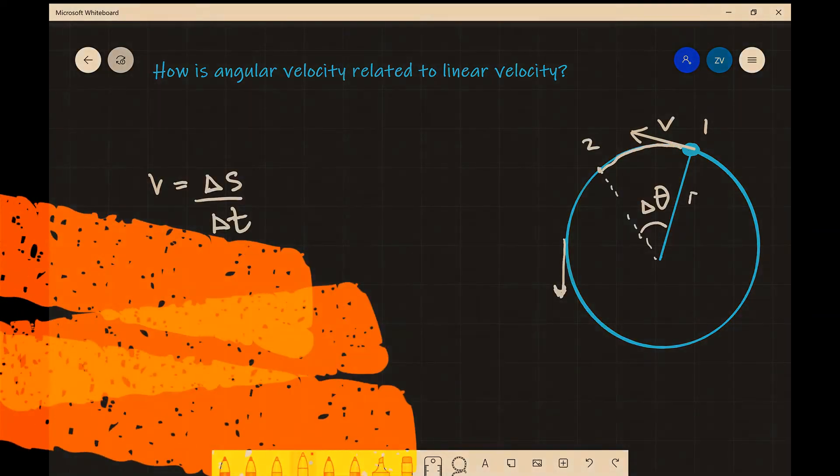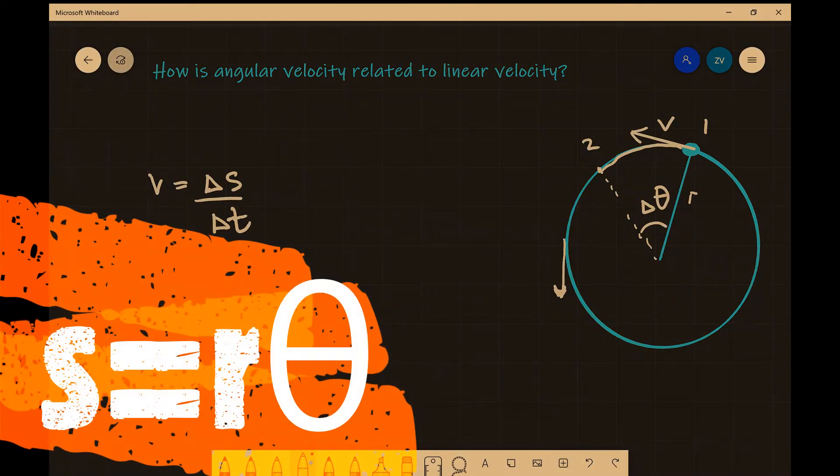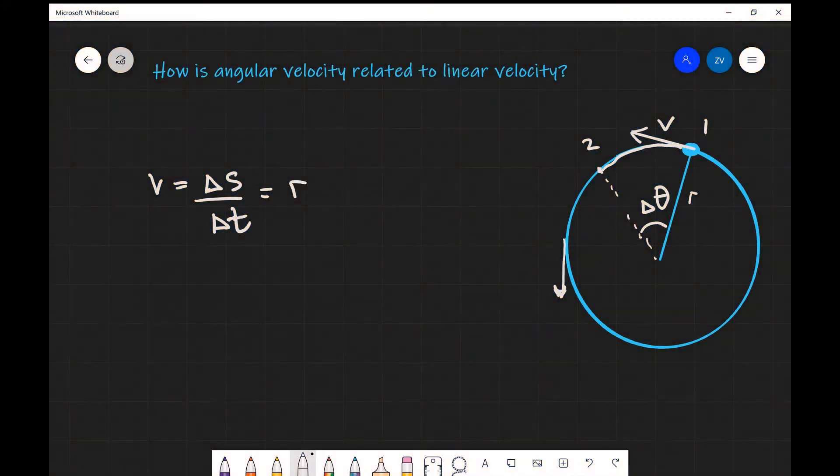Now if we remember from maths, arc length is equal to r times your change in angle, the angle that was subtended by this arc. So this is going to equal to the radius multiplied by delta theta, like so, divided by delta t.